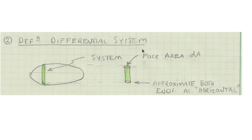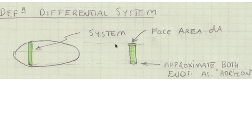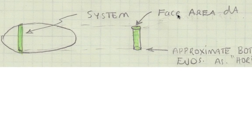Recall that a system is a collection of matter defined by the engineer. Step 2 is to define this system. As shown here, the face area is dA, and the height of the system is equal to the height of the body at the point in question. Notice that this system looks much like an apple core.